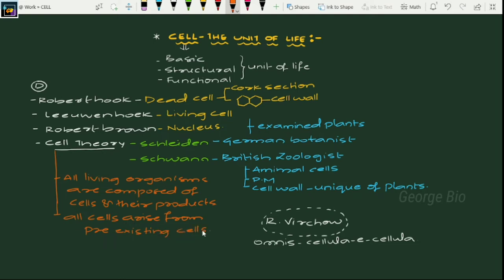Because of this contribution, the cell theory became a complete cell theory. If a question is asked on whose contribution cell theory became a complete framework, that is Rudolf Virchow. If asked how many people contributed to cell theory, the answer is three: Schleiden, Schwann, and Rudolf Virchow.